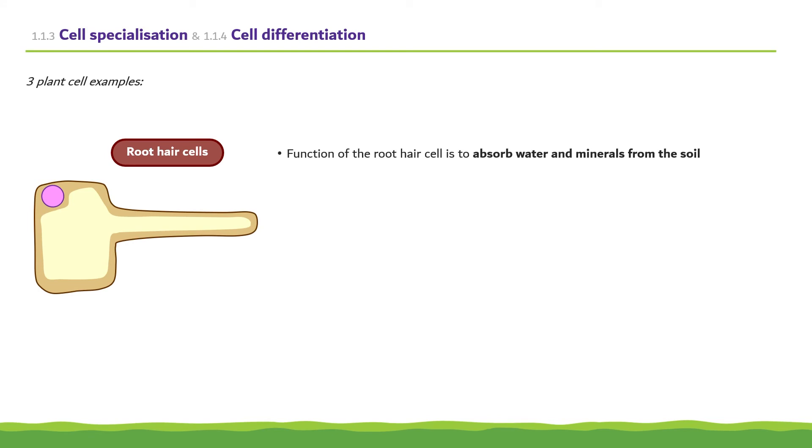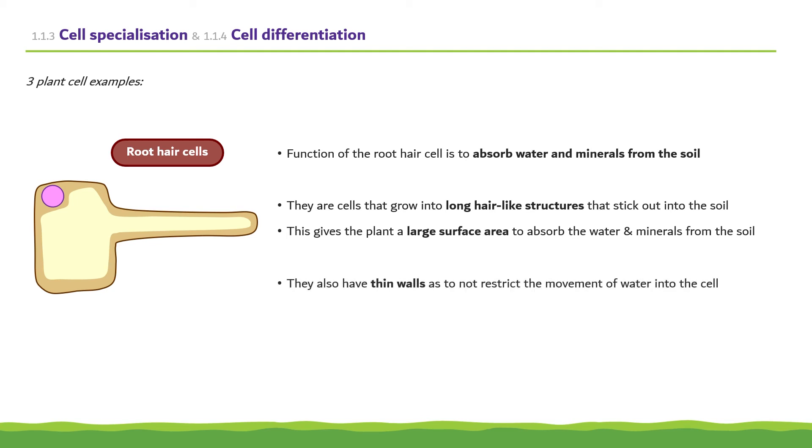Now moving to the specialized plant cells, starting with the root hair cells. The function of the root hair cells is to absorb water and minerals from the soil. They are cells that grow into long hair-like structures that stick out into the soil, giving the plant a large surface area to absorb the water and minerals from the soil. They also have thin walls as to not restrict the movement of water into the cell.